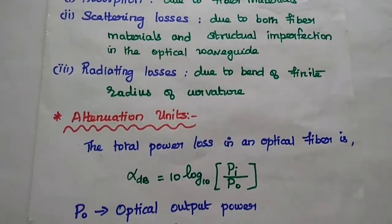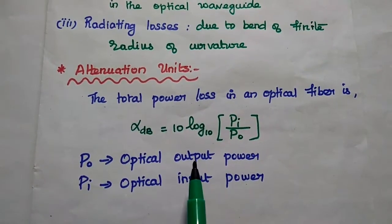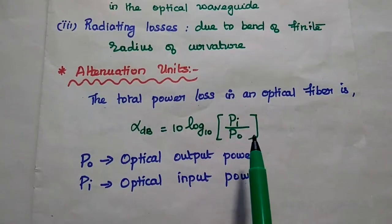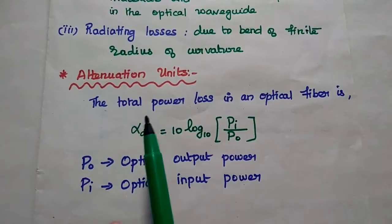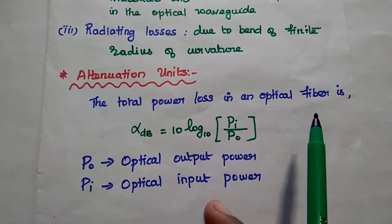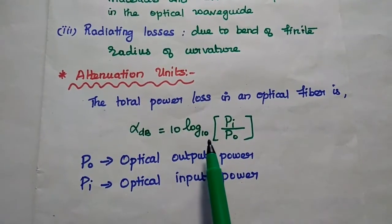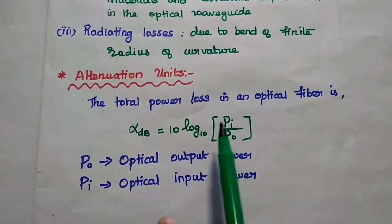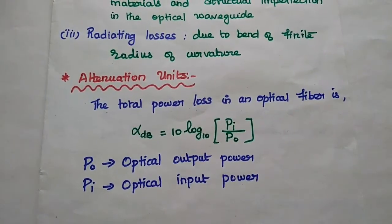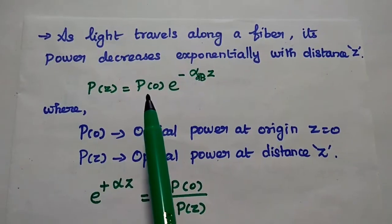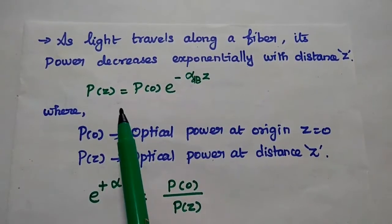Next we are going to analyze the attenuation parameter with its units. Here we relate the input optical power and the output optical power at some distance. The total power loss in an optical fiber is measured in terms of dB, which is equal to 10 log base 10 of Pi by Po, where Pi is the input optical power and Po is the output optical power.